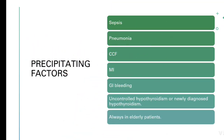What are the precipitating factors for myxedema coma? The most common one is sepsis. Others include pneumonia, CCF (congestive cardiac failure), MI (myocardial infarction), and GI bleeding. Mostly myxedema coma occurs in a patient with uncontrolled hypothyroidism, or a patient who first presents with newly diagnosed hypothyroidism. Most of the time, myxedema coma occurs in the elderly patient.